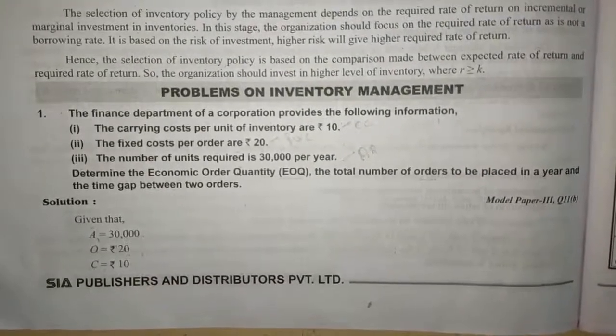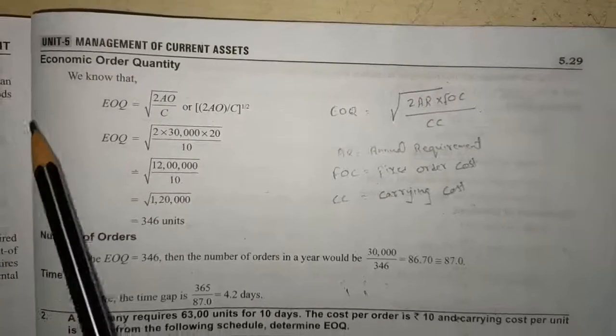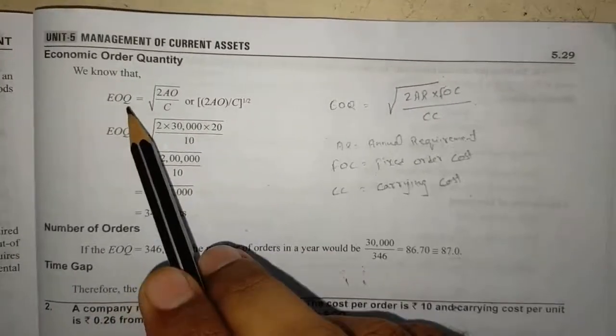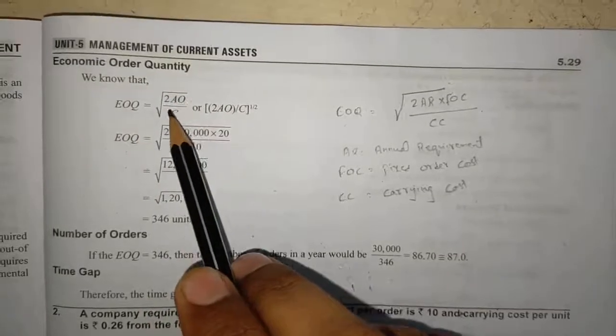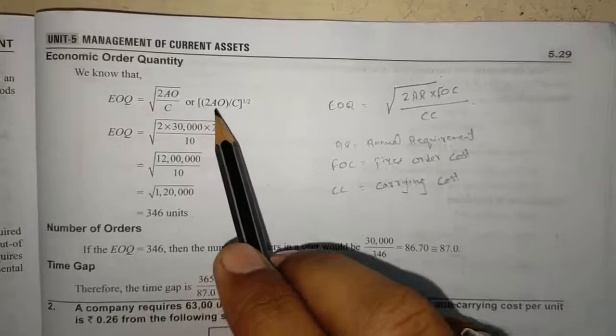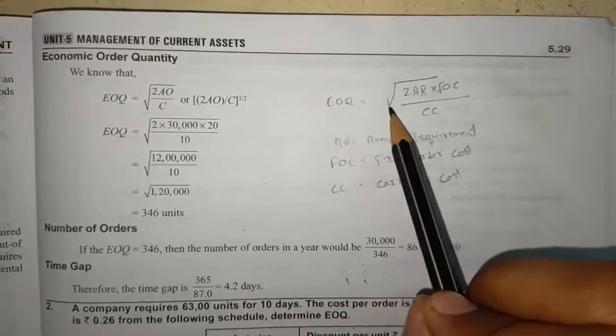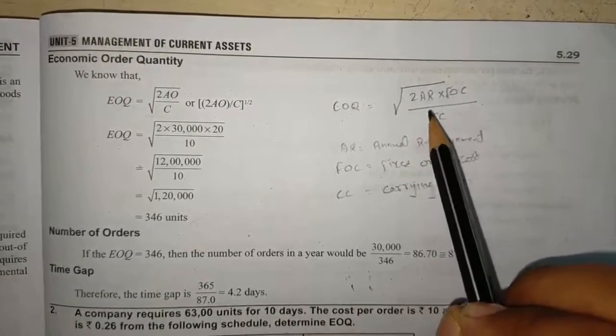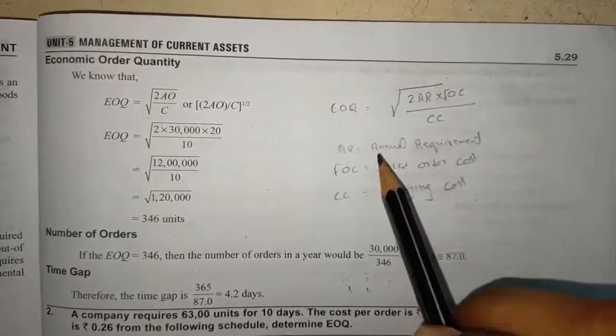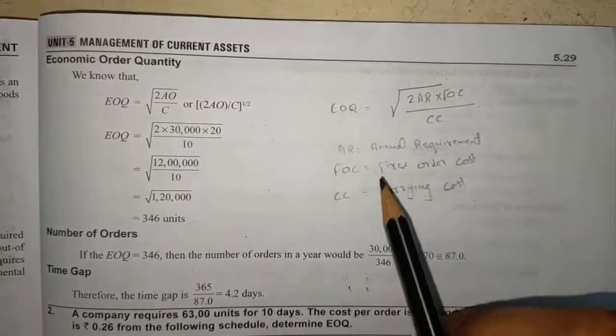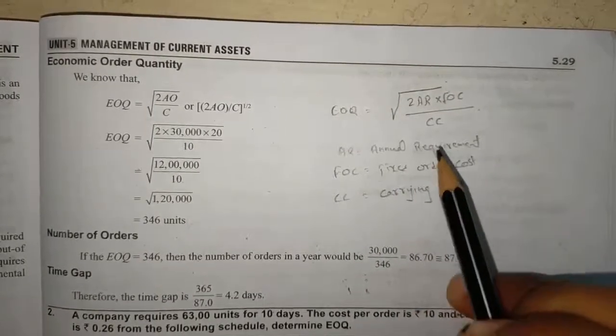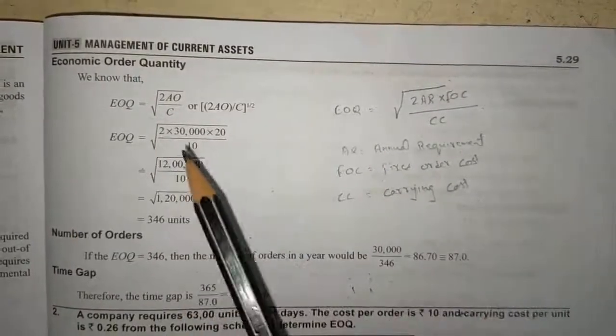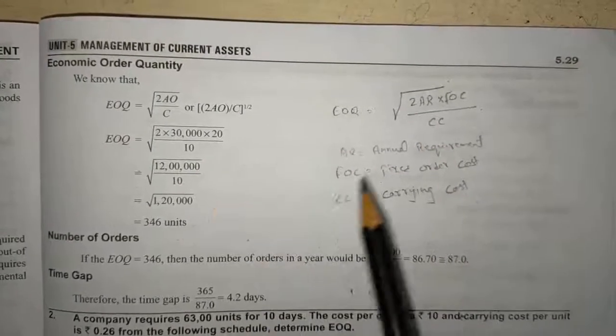We'll see how to solve EOQ. To find out economic order quantity, we use this formula: EOQ equals square root of 2AO by C. Or you can change the notations and write 2AR times FOC divided by CC. When we substitute the data given into this formula, we will get our answer.